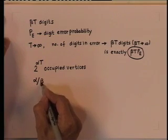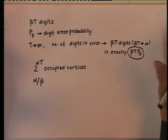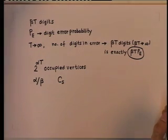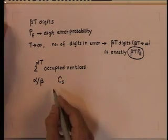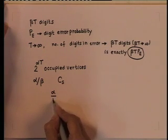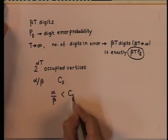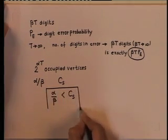Shannon's theorem states that for this scheme to be successful, the alpha by beta ratio must be less than some constant, and that constant is denoted by channel capacity C_s, which is a function of the channel noise and the signal power. So Shannon's theorem says that alpha by beta should be less than C_s, which is channel capacity.